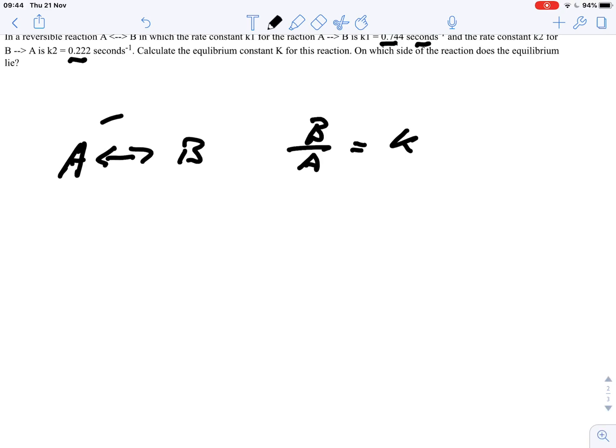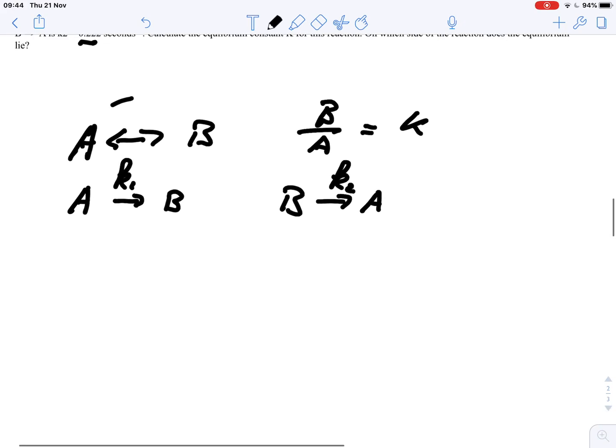And we have this as a reversible reaction, so we can write A is converted into B with a rate constant k1, and B is converted into A at a rate constant k2.